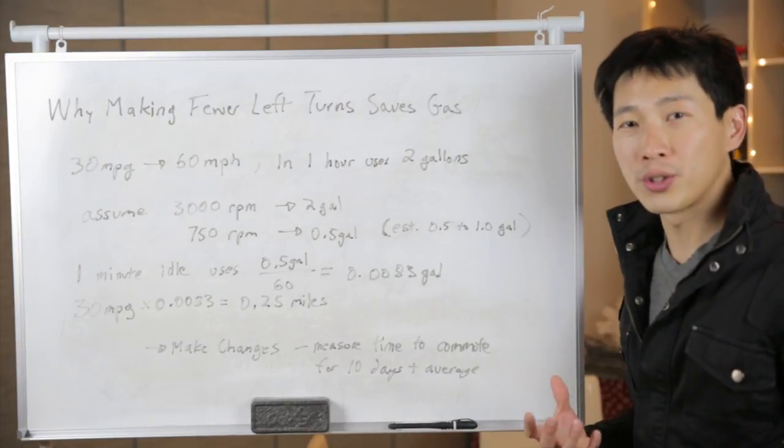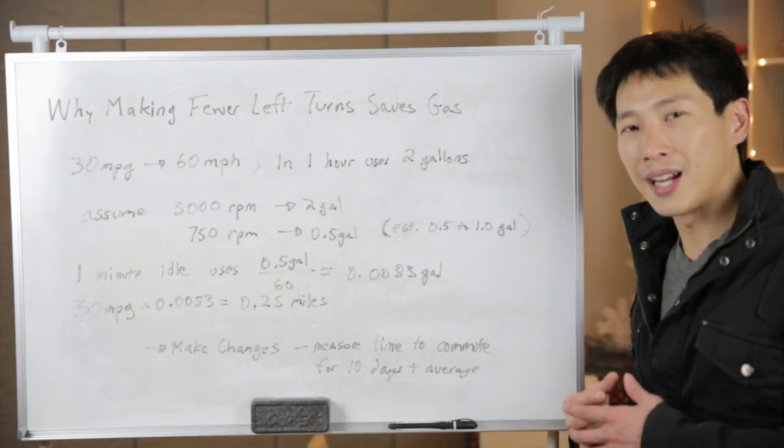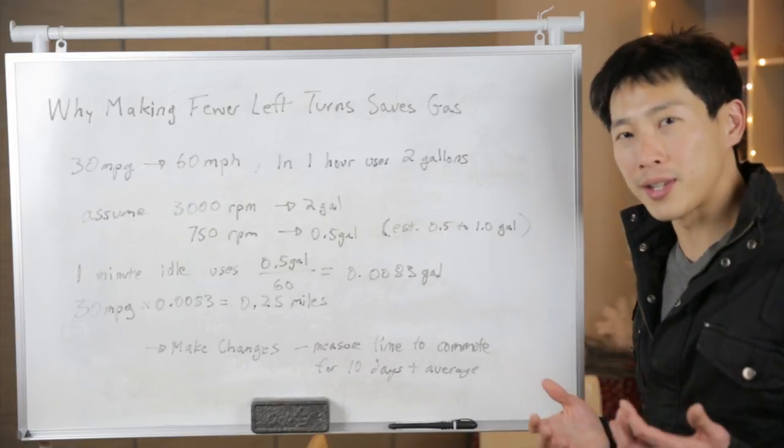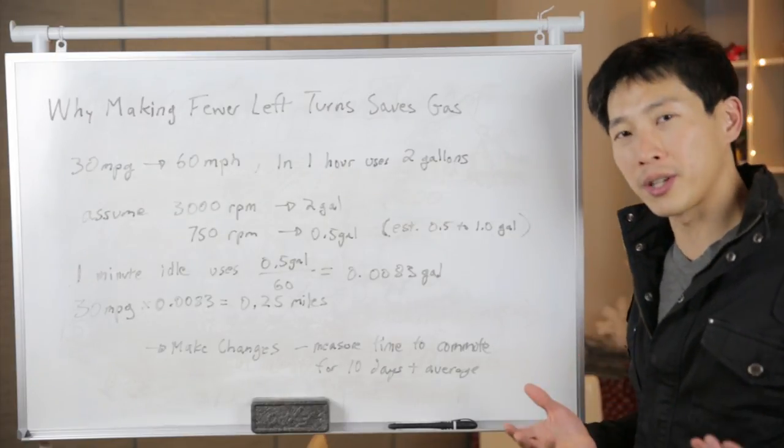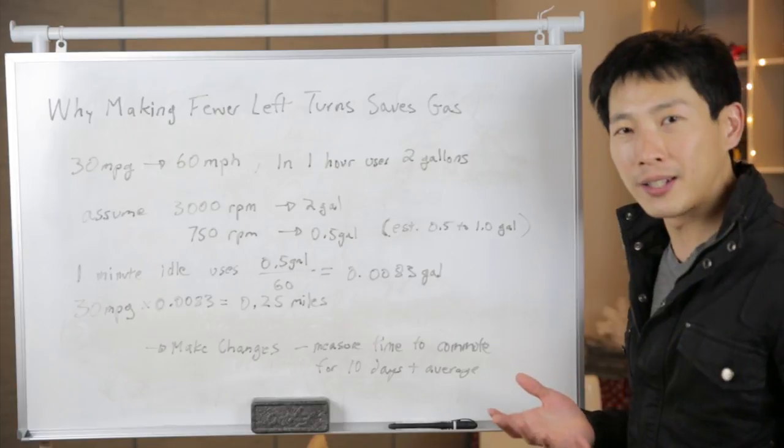Now, if you're going to make changes to your commute by making more right turns, people might have a tendency to just only measure one time and go, oh no, look, see, I changed my commute. I'm a little later this time. It took me one or two more minutes.